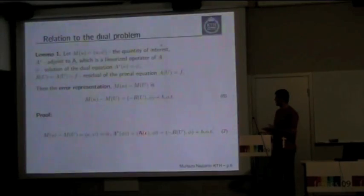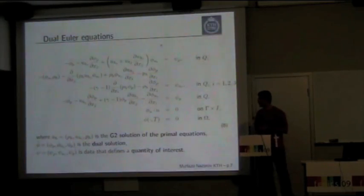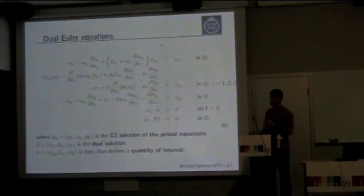How to get this relation? It comes from the definition of adjoint operator. A star is adjoint operator to operator A. I wrote error in this form and did integration by parts, then got the linearized equation. When we have this equation, we do backwards step and integration by parts to put operator A to phi, then we get the dual problem.